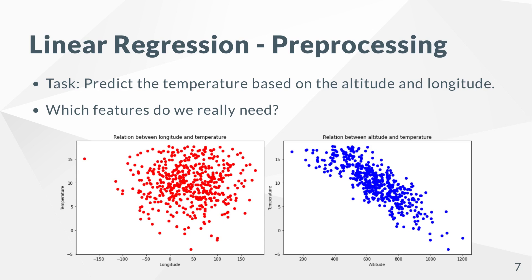The task of linear regression is to predict the temperature based on the altitude and the longitude. But first we need to decide whether we really need both features. If we make a simple scatter plot of how these values depend on each other, we can see that longitude does not really depend on temperature because the scatter plot is pure noise, while we do see a linear relation between altitude and temperature.